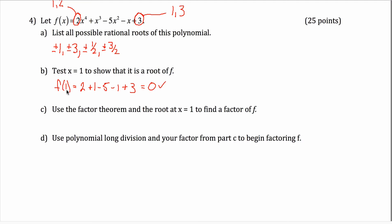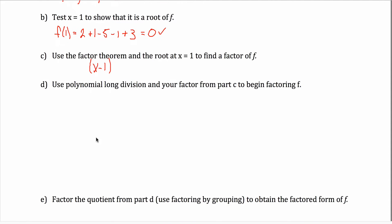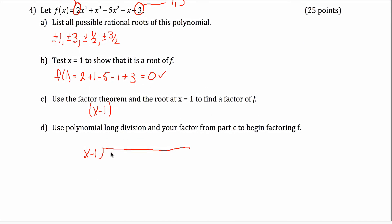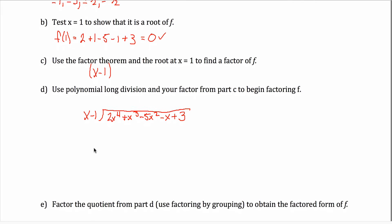The factor theorem tells us that if r is a root of a polynomial, then (x − r) is a factor of that polynomial. So specifically, because 1 is a root, (x − 1) must be a factor. That means I can use polynomial long division — divide (x − 1) into the original polynomial: 2x⁴ + x³ − 5x² − x + 3.